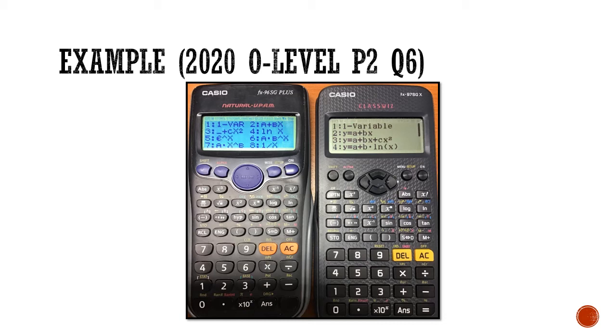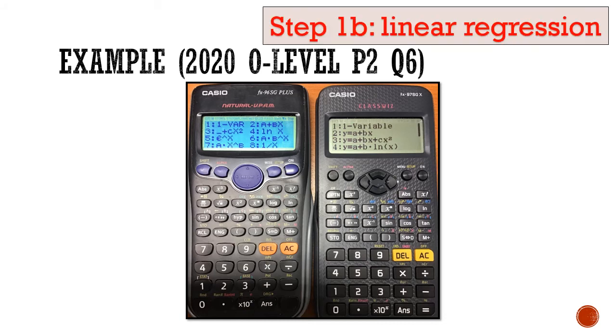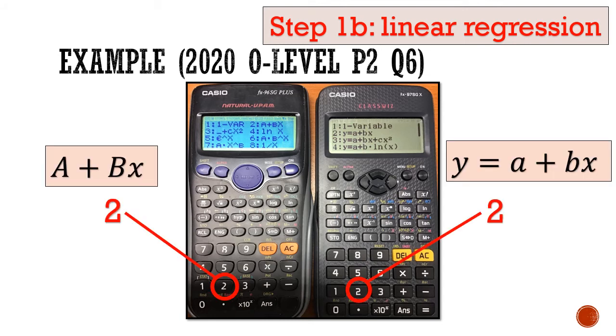But for linear regression, we're going to find the linear regression option, and that would be number 2. It would be A plus Bx for the 96SG. It would be y equals A plus Bx for the 97SG. So select option number 2.